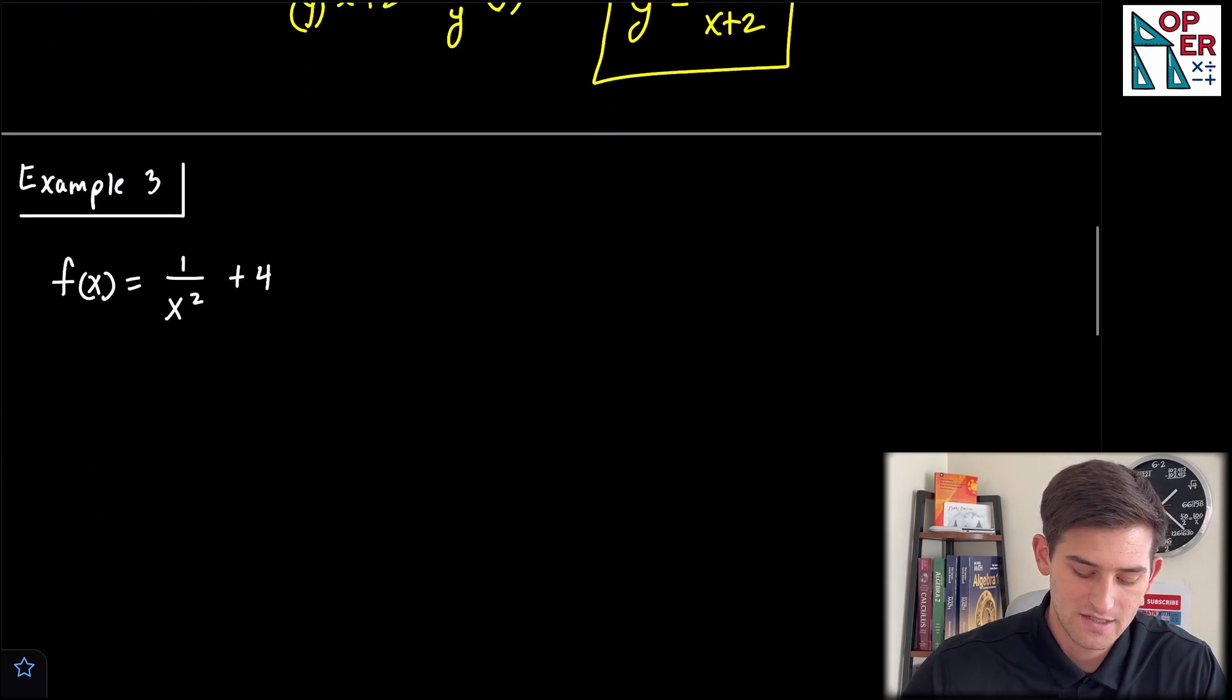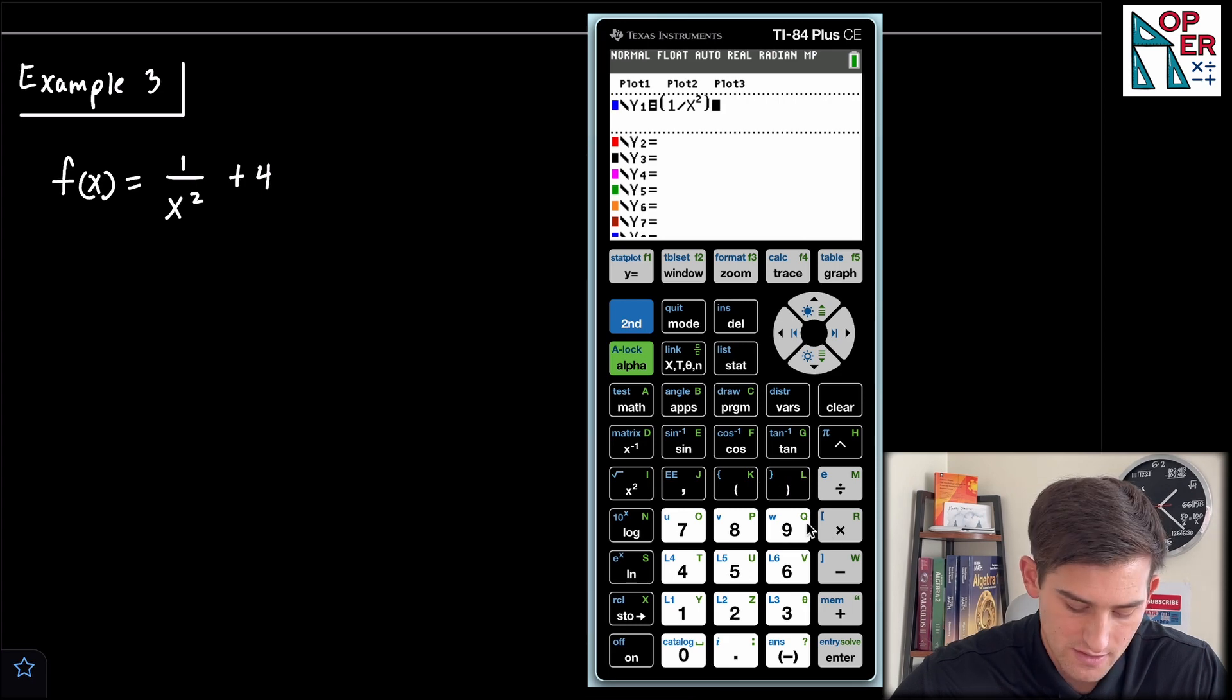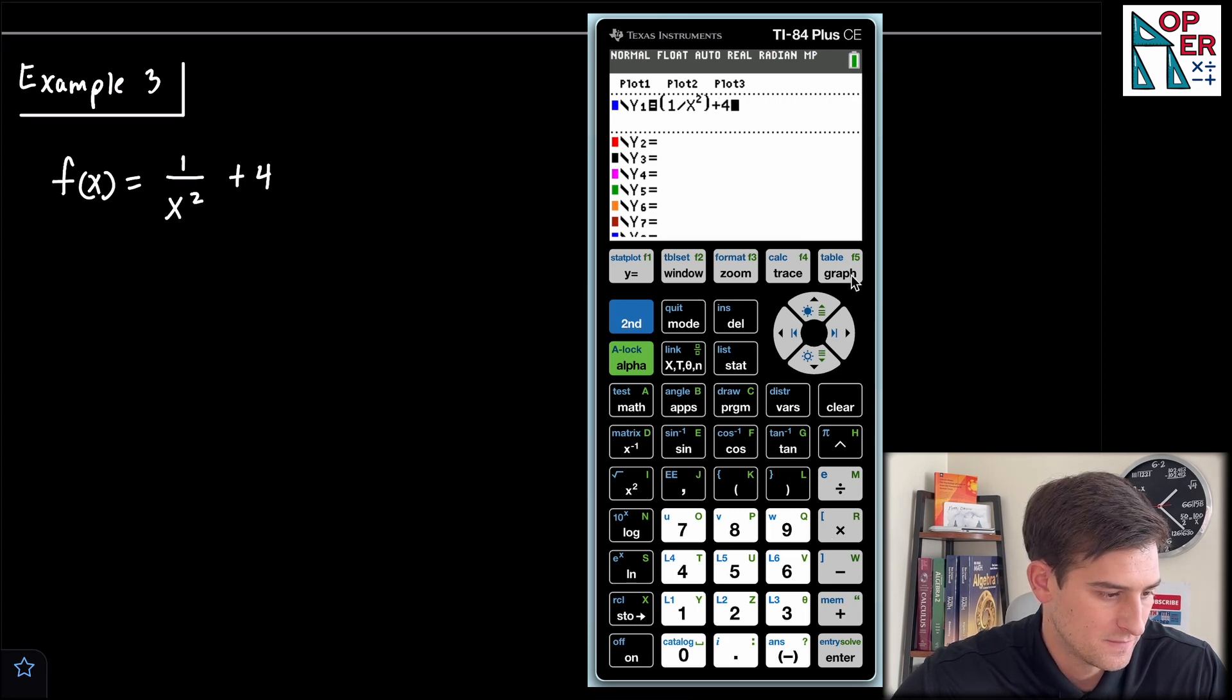And our last example, let's go ahead and graph this one and see if it passes the horizontal line test. So let's do parentheses 1 divided by x squared, close our parentheses, and then plus 4, and we graph it.